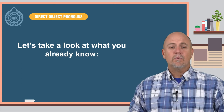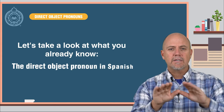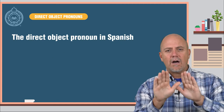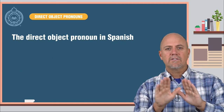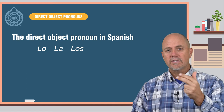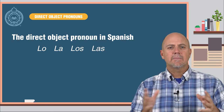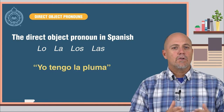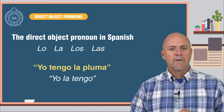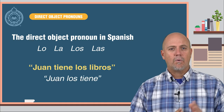So let's take a look at what you already know: the direct object pronoun in Spanish. The direct object pronouns in Spanish are lo, la, los, and las. Here are some examples: Yo tengo la pluma — Yo la tengo. Juan tiene los libros — Juan los tiene.